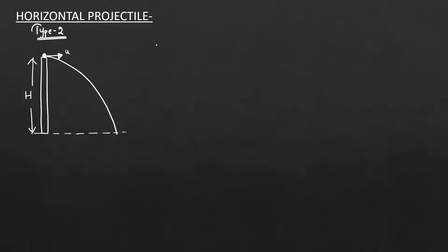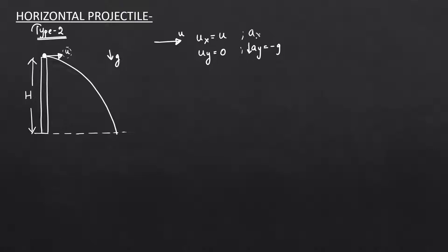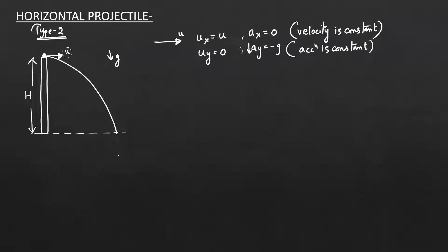To analyze this projectile, we first resolve the initial velocity. The velocity is purely horizontal, so the initial velocity along the x-axis is u, and the initial velocity along the y-axis is zero. Acceleration along the y-axis is minus g (downward), and there is no acceleration along the x-axis, so ax = 0. Since ax = 0, velocity is constant along x, and we apply kinematic equations along the y-axis.